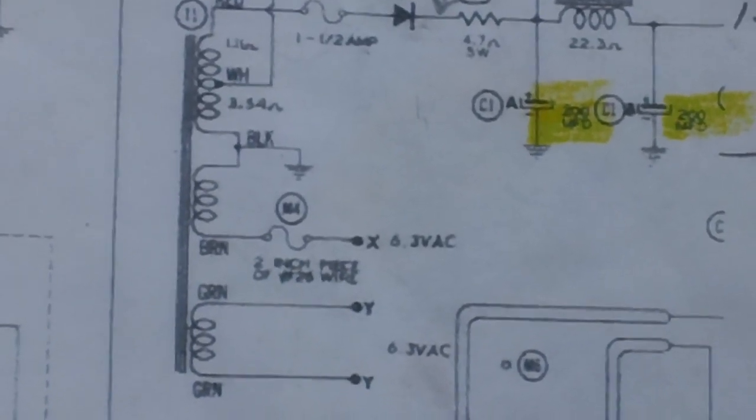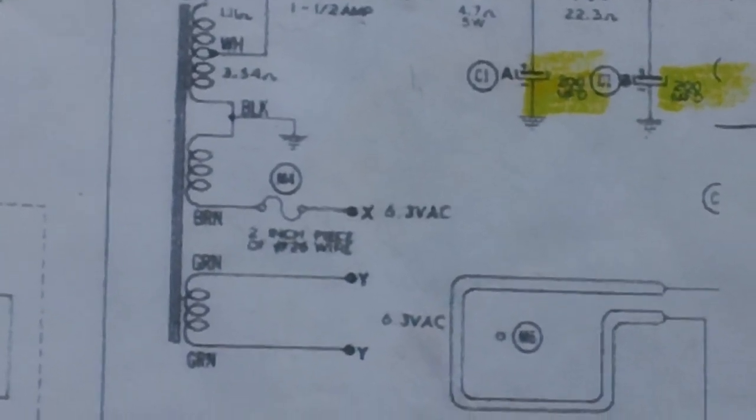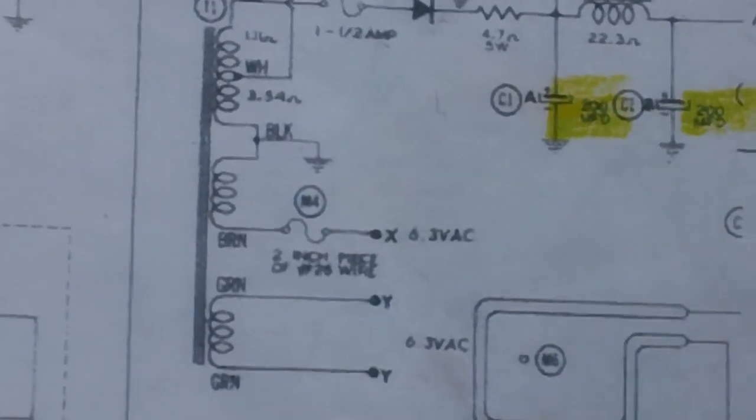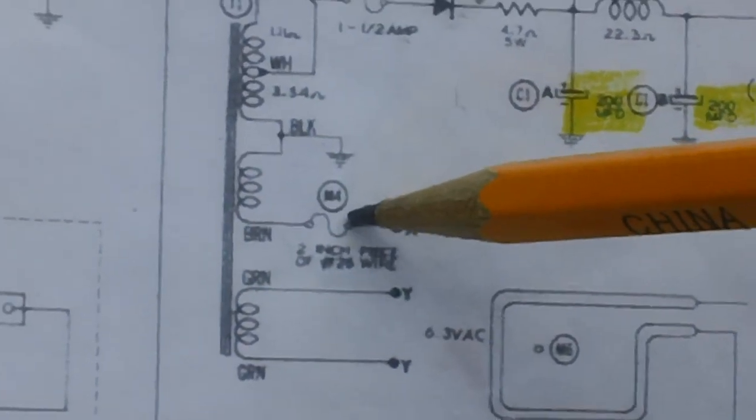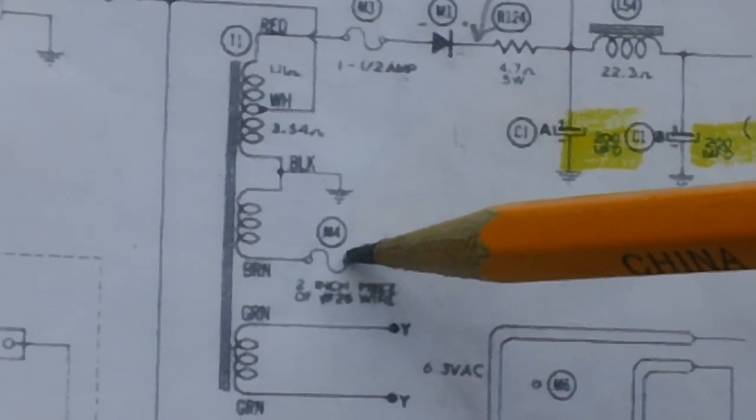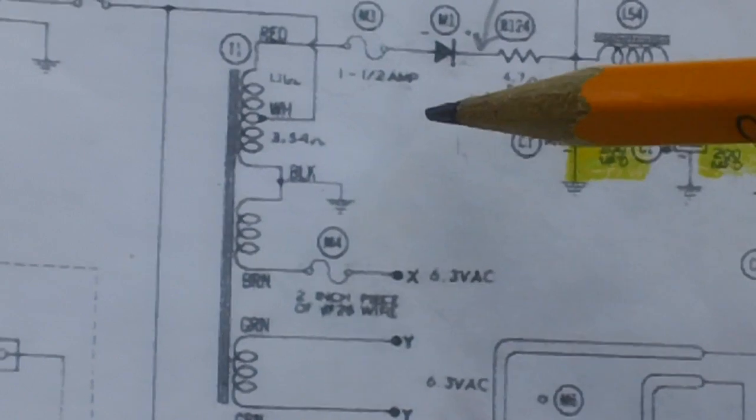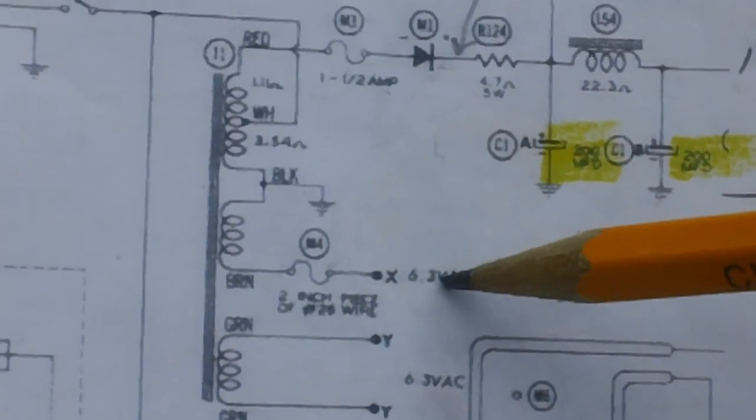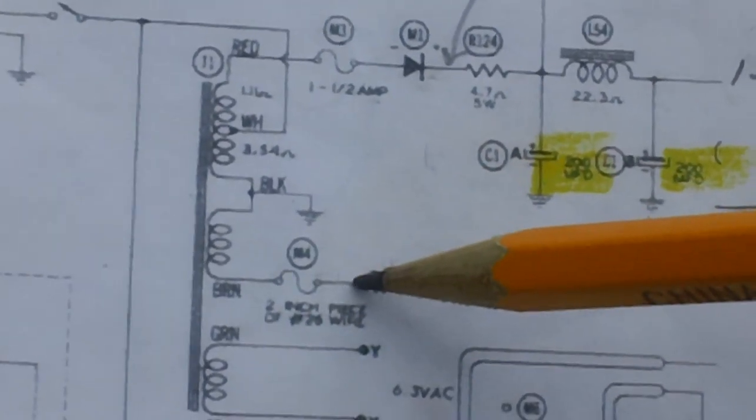What happened was whenever the TV was heating up, one of these two solder joints was, you know, it just lost contact and I was losing my filament voltage to all my tubes.